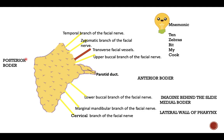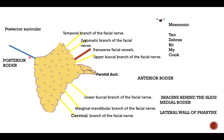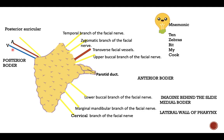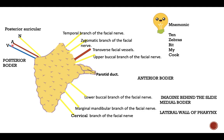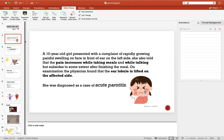Now the posterior border of the parotid gland: it is related to the posterior auricular vein, the posterior auricular artery, and the posterior auricular nerve.